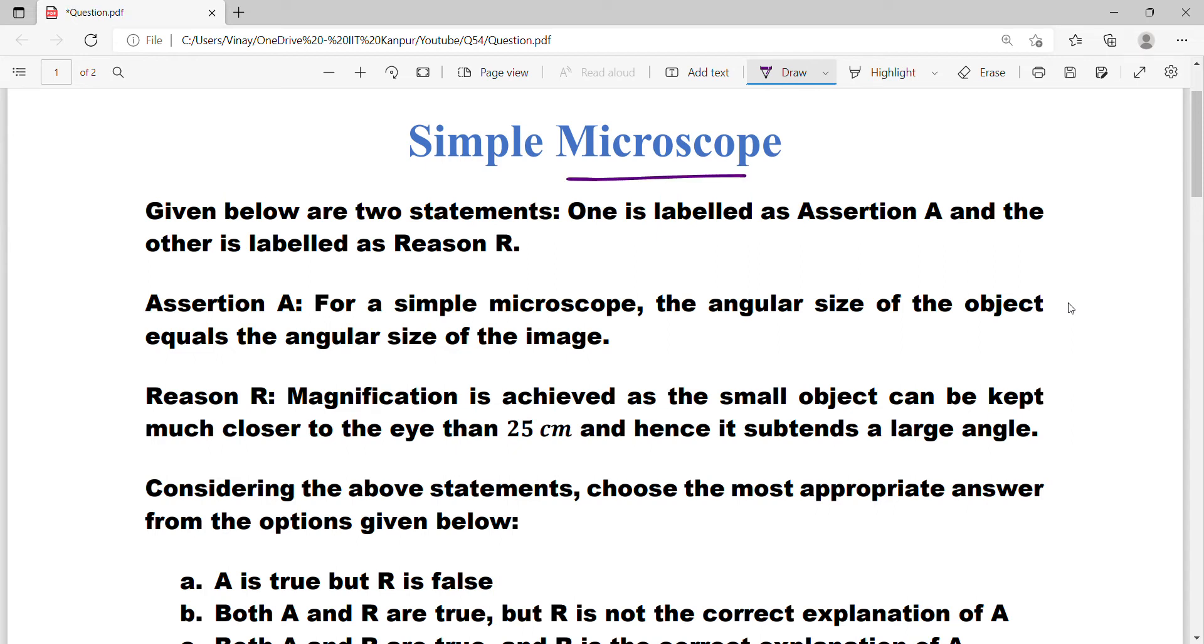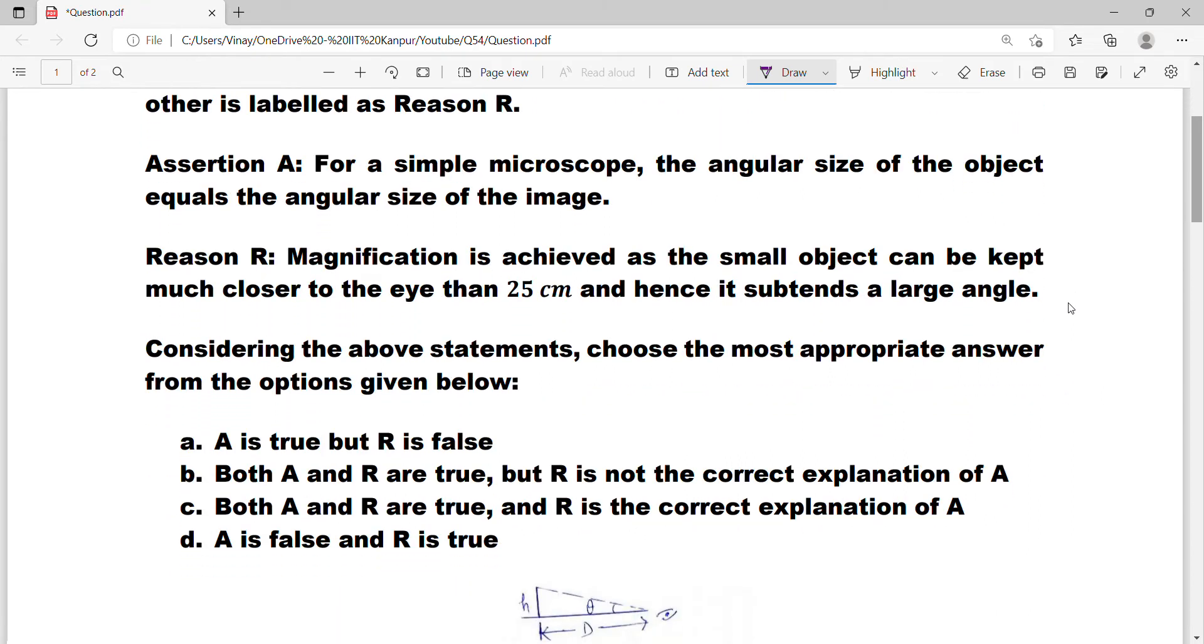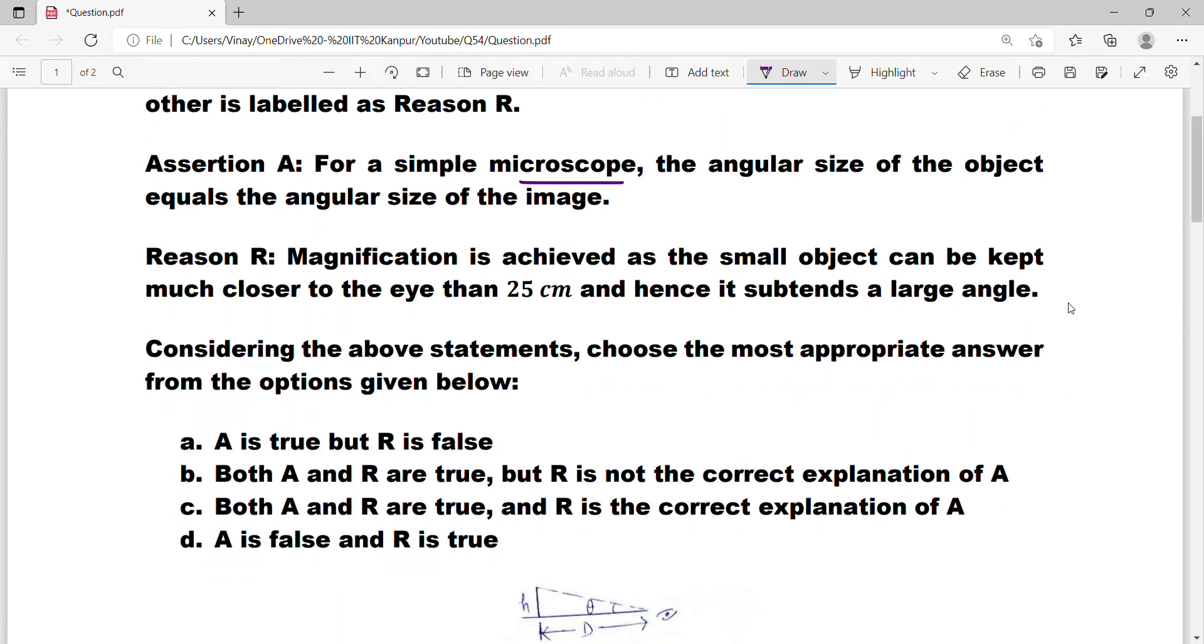Let's start. This question is based upon a microscope. Let me just read the question for you. It's an assertion and reason question. For a simple microscope, the angular size of the object equals the angular size of the image. Angular size means basically the angle subtended by the object and the image at the optical center. The reason is: magnification is achieved as a small object can be kept much closer to the eye than 25 centimeters, and hence it subtends a larger angle.